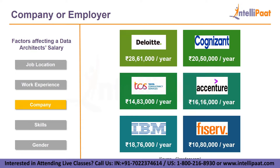The bigger the size of the company, the more salary you can expect. Tech giants like IBM, Oracle, Infosys, Adobe, TCS, and Amazon have humongous amounts of data, and to utilize it they need skilled data architects and are willing to pay high salaries. According to Glassdoor.com, Deloitte offers a big data architect salary of 28 lakhs 61 thousand per annum on average, and Cognizant Technology Solutions offers 20 lakhs 30 thousand. TCS, Accenture, IBM, and Wipro pay 14 lakhs 83 thousand, 16 lakhs 16 thousand, 18 lakhs 76 thousand, and 10 lakhs 80 thousand per annum respectively.